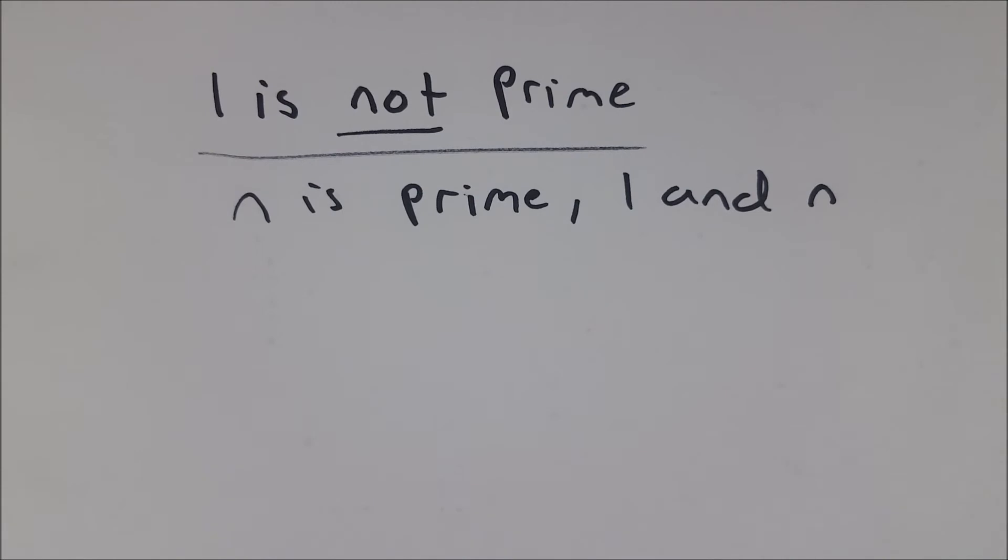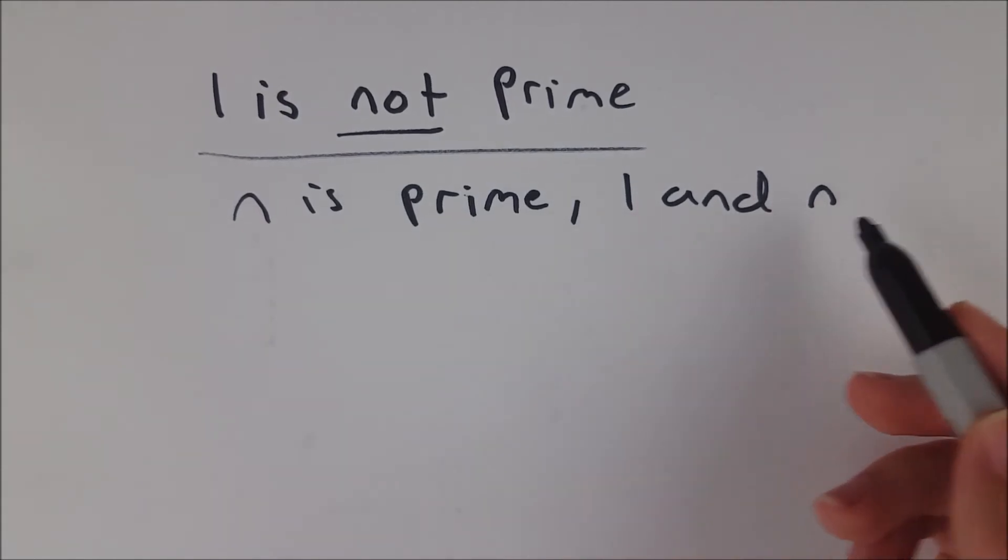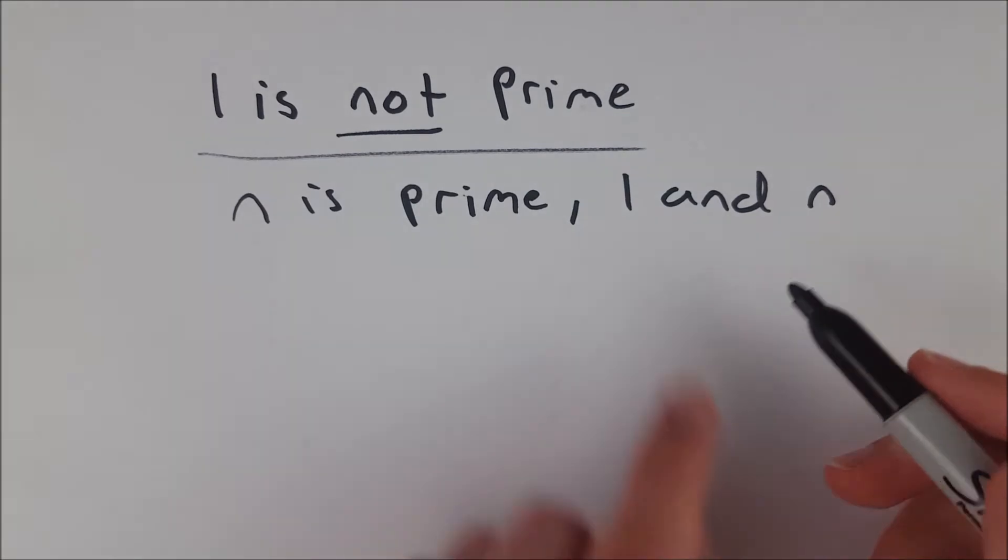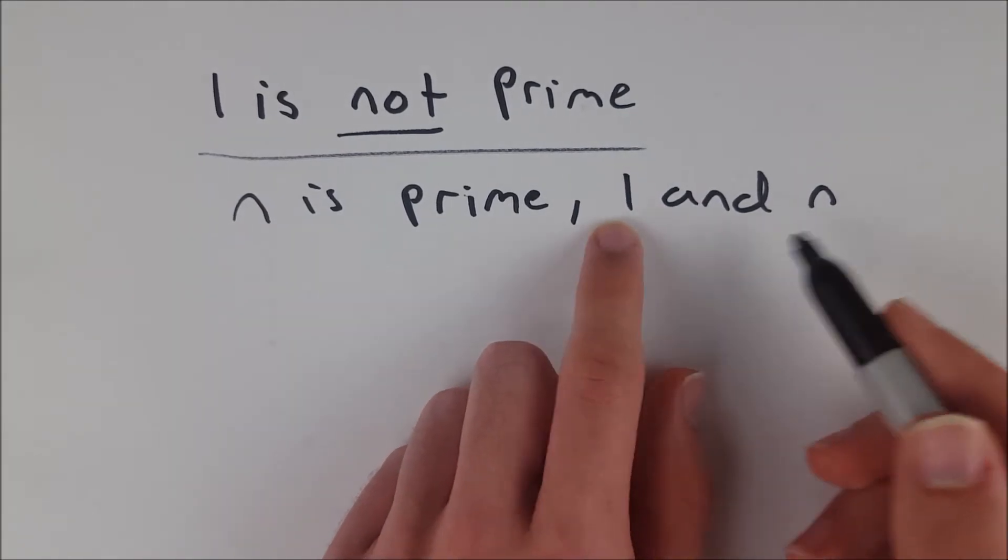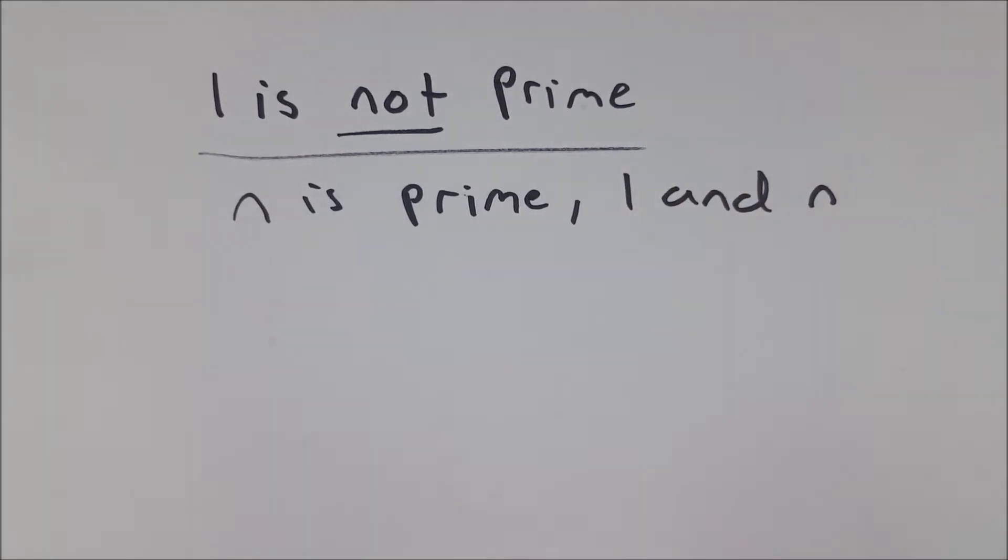But that's not really why, though. If 1 and n have to be distinct, then of course 1 is not prime, because n would also be 1, and 1 is not different from 1, obviously. So that's a way to think about it, some way to justify 1 not being prime.